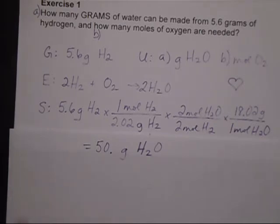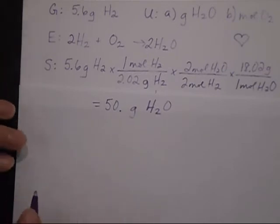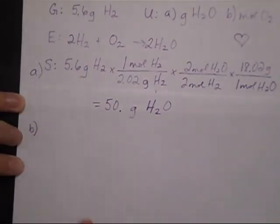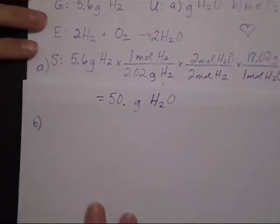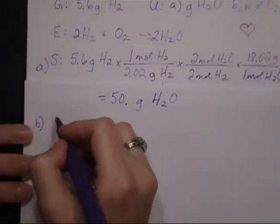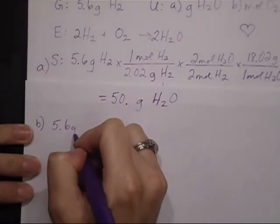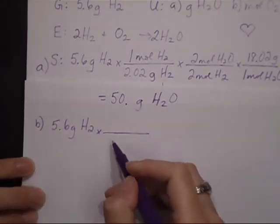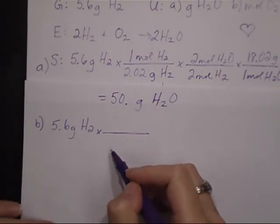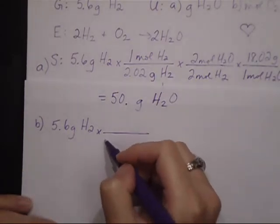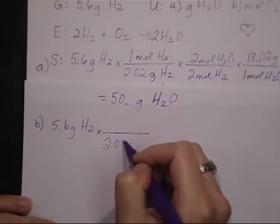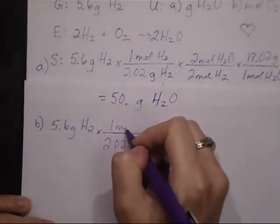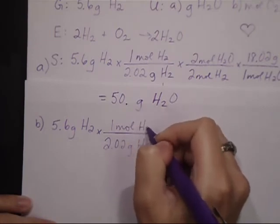Alright, for part B, I'm still going to start with my given. So, 5.6 grams of hydrogen. Again, mole is the heart of chemistry, so I have to get to a mole first. So, 2.02 grams of H2, and one mole of H2.